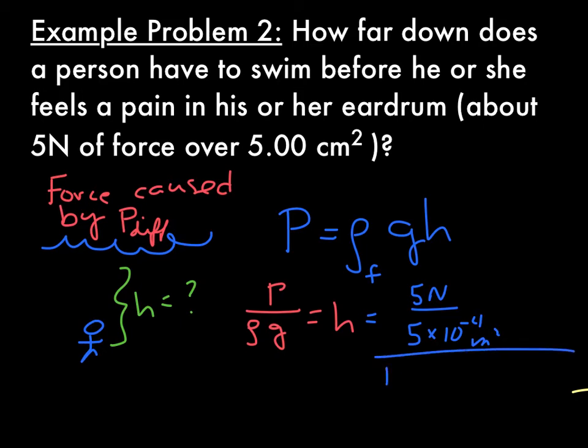5 times 10 to the minus 4 meters squared, divided by 1,000, density of water is 1,000 kilograms per meter cubed, times the acceleration due to gravity, meters per second squared.